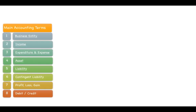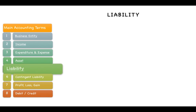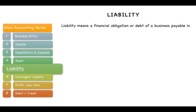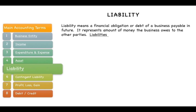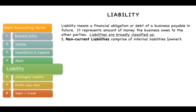The next term is liability. Liability means a financial obligation or debt of a business payable in future; it represents the amount of money the business owes to other parties. Liabilities can be broadly classified as non-current liabilities, which comprise internal liabilities to the owners — that is, capital initially contributed by them.